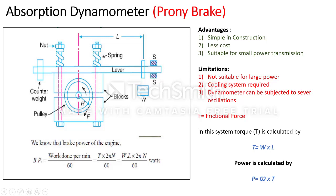This is the nut, which is shown in dotted line. At the top and bottom there are nuts, and in between them there is a compression spring. By using this arrangement we can tighten or loosen the nut to get various brake powers. At the left side there is a counterweight, which is used for balancing the lever.